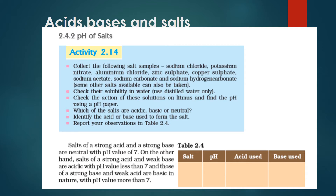Hydrochloric acid, sulfuric acid, etc., lie at around 1 on the scale. Today we are going to learn about the pH of salt. We know that water has a pH of 7 — but what is the pH of salt? To understand, let's perform Activity 2.14. First step: collect the following salt samples — sodium chloride, potassium nitrate, sodium carbonate, and sodium hydrogen carbonate.